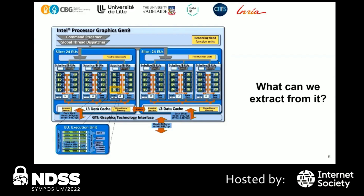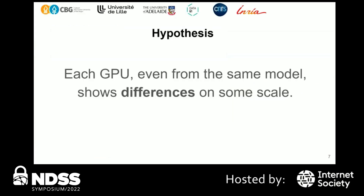We looked at this architecture and asked: what features can we extract to fingerprint GPUs — even GPUs of the same model? We thought we need to focus on the parallel nature of the GPU, because that is where most distinguishing features will be. Our hypothesis is that each GPU, even from the same model, shows differences on some scale. Each execution unit is very small, so differences between them can be quite significant.